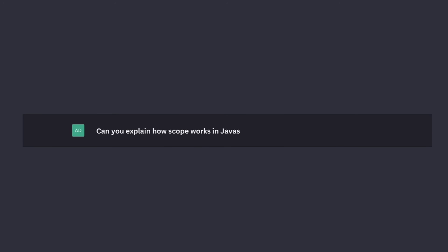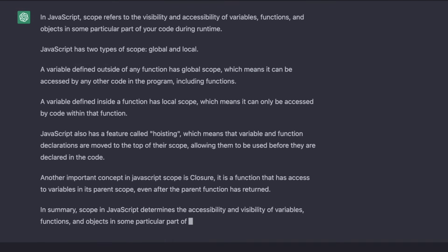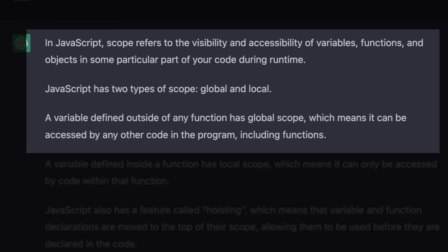Say you're learning JavaScript and you run into this weird idea called scope. You could turn to ChatGPT and ask it something like, can you explain how scope works in JavaScript? It comes back with: scope refers to the visibility and accessibility of variables, functions, and objects in some particular part of your code. JavaScript has two types of scope: global and local. A variable defined outside of any function has global scope. Now, this is a pretty good explanation, but it's very technical — looks like something you'd see in documentation.